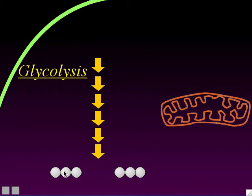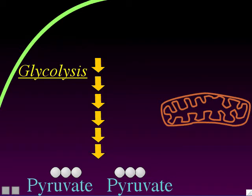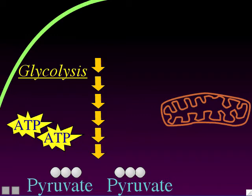The two molecules that the cell ends up making at the end of glycolysis are called pyruvate molecules. The glucose was broken down by the glycolysis enzymes into two pyruvate molecules. The cell gets enough energy from the glycolysis pathway to recharge two ATPs — by breaking down the glucose into two pyruvates, the cell gets enough energy to recharge two ATPs.